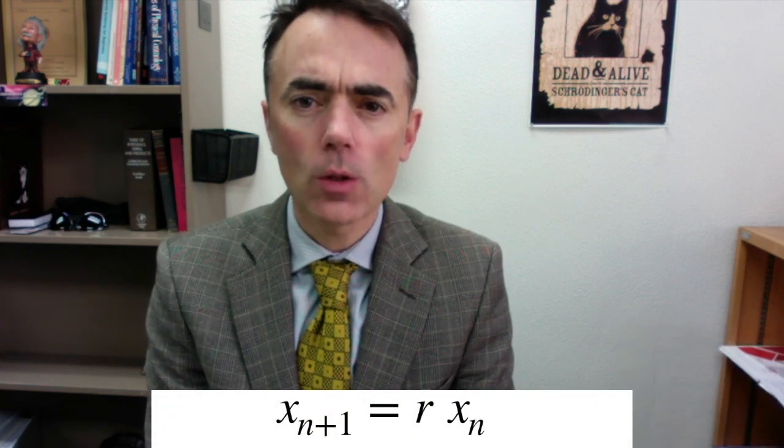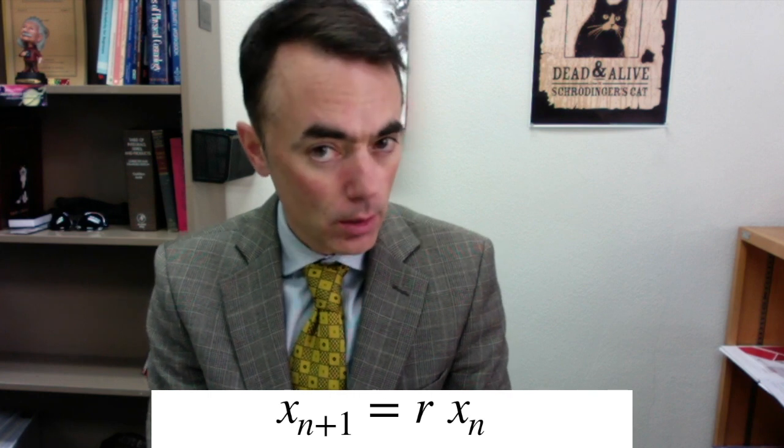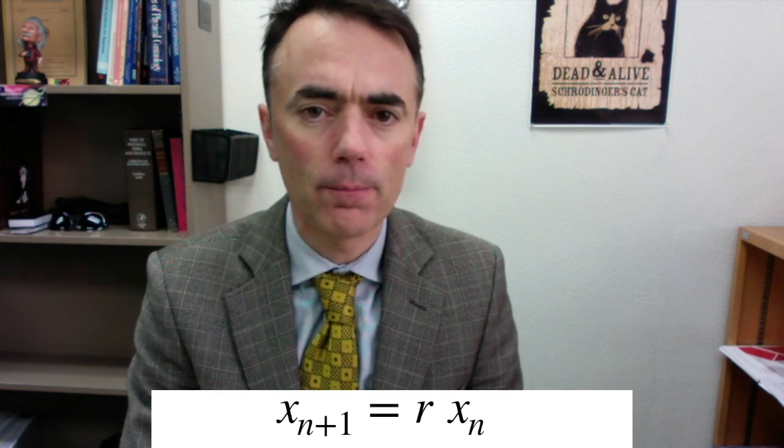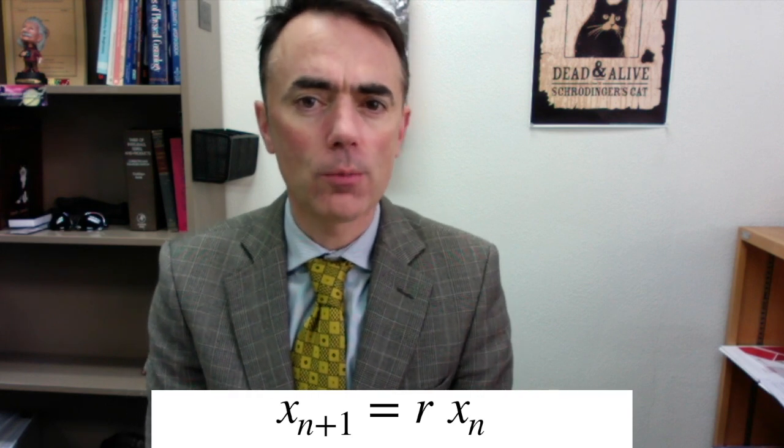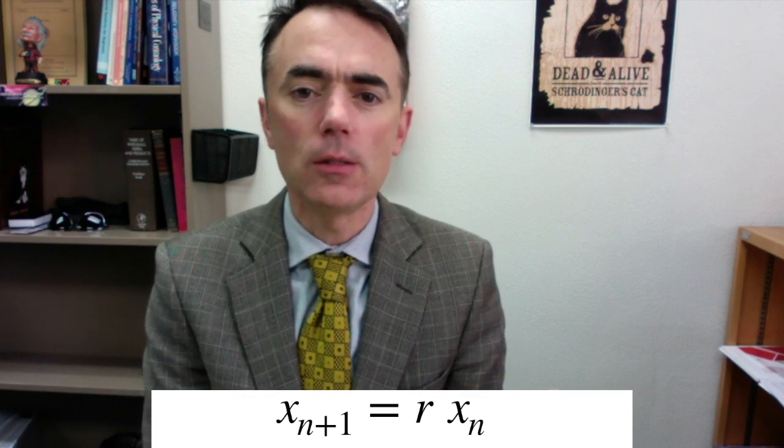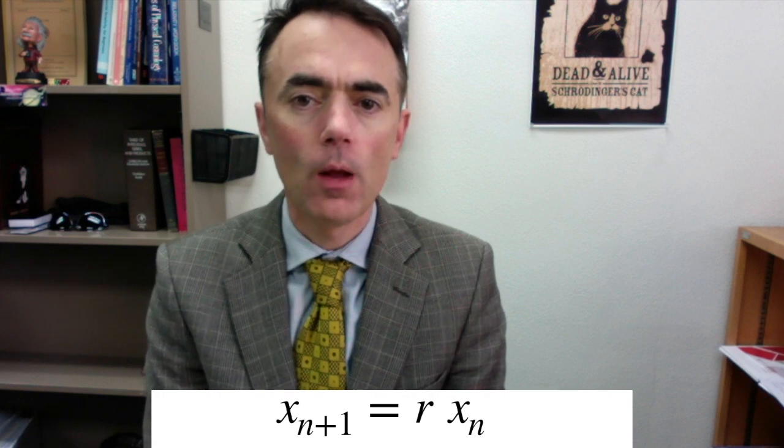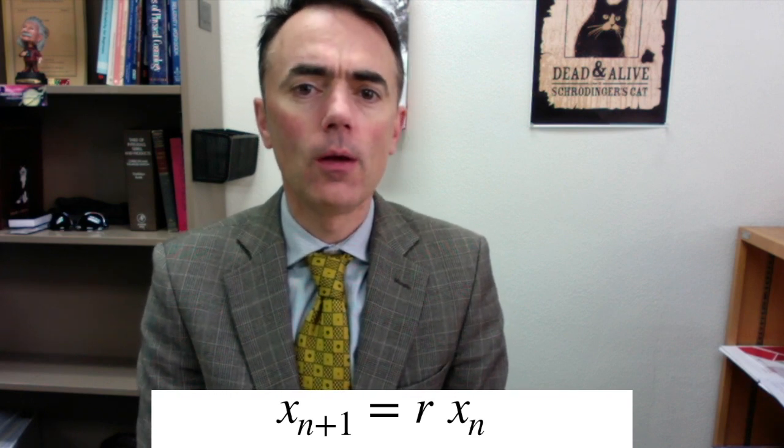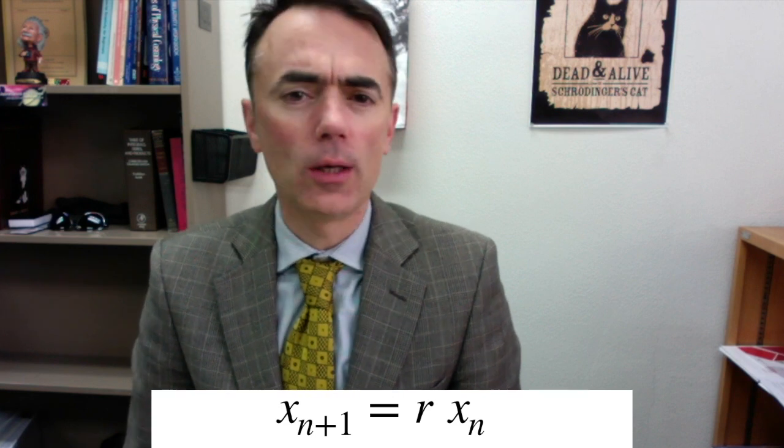So we have x sub n plus 1 equals r times x sub n, where x sub n is the population at iteration n. For this map, if r is smaller than 1, the population will disappear, it extinguishes. While if it's larger than 1, it will grow without limit. But this looks a poor modeling of the population.